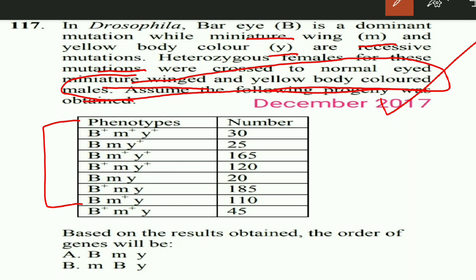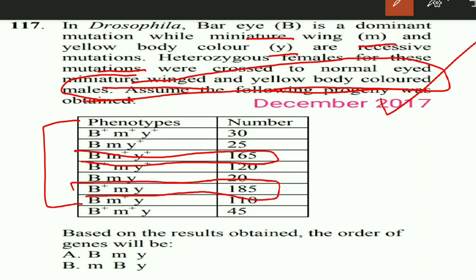First of all, we have to look for the greater number of parentals. We look for the progeny that are greatest in number — they are the parental type. b, m+, y+ are in greater number, and similarly b+, m, y are in greater number. That is why these two are the parental types.